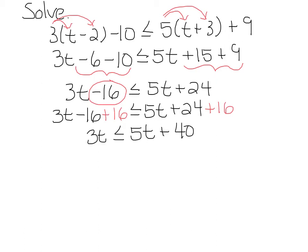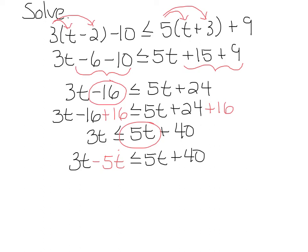Now we want to move the variables over to the left, and we'll do this by subtracting 5t from both sides. The reason why we're subtracting 5t is because 5t here is a positive 5t, so to move it, we subtract it. We're left with negative 2t less than or equal to 40.